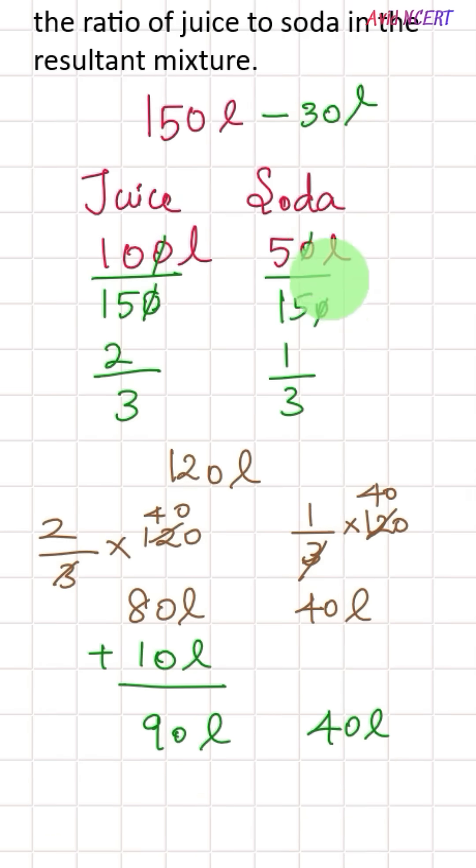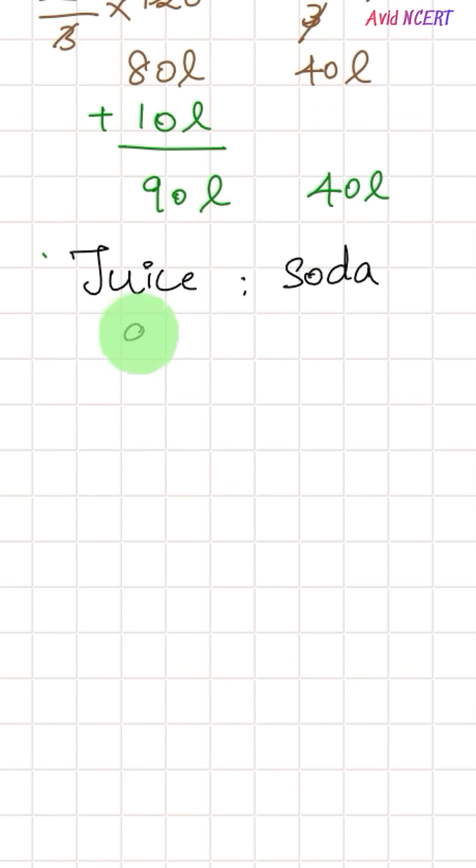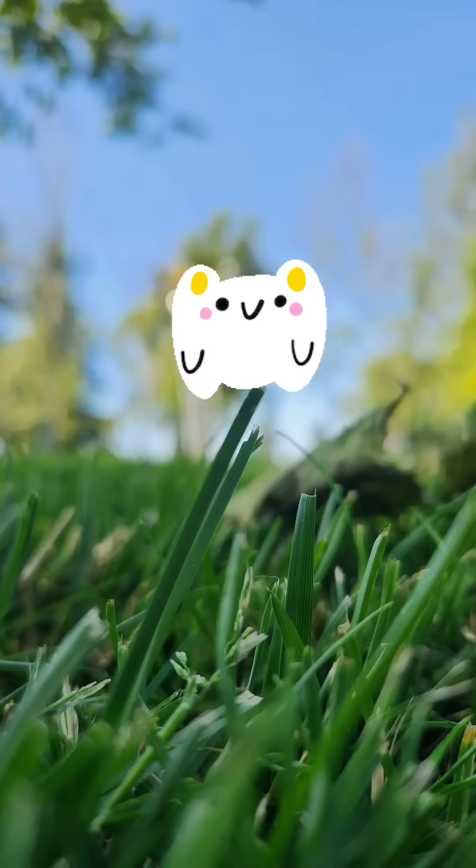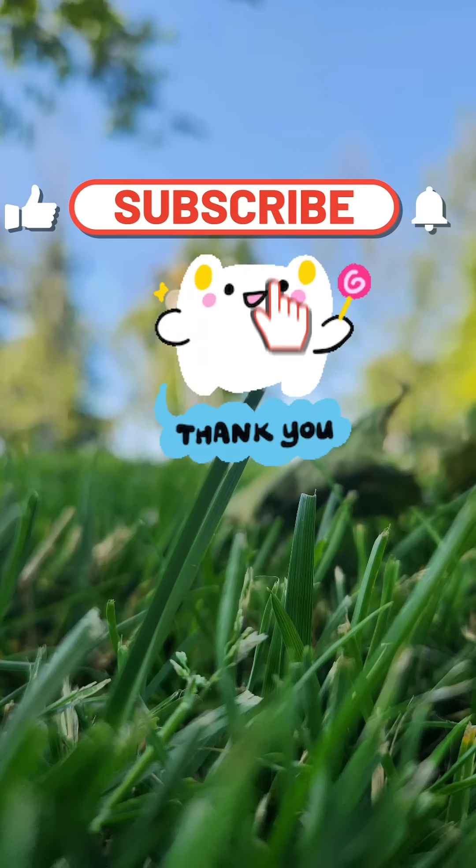Now the question is: find the ratio of juice to soda. Juice is to soda as 90 is to 40. Zeros get cancelled, which is 9 is to 4. So the ratio in which juice is to soda in the resultant mixture is 9 is to 4. Thanks for watching. If you have any questions, please let me know in the comments.